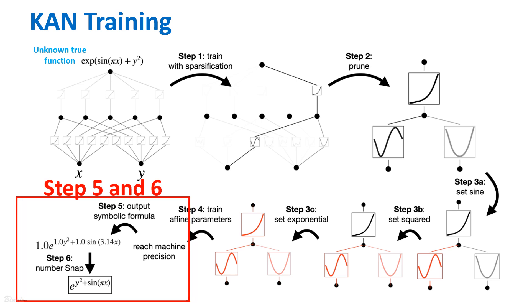Finally, we arrive at step five and six, outputting the symbolic formula. The symbolic formula of the output node can be computed. It enables us to obtain a precise symbolic representation of the underlying mathematical relationship within the KAN. Upon running the computation, the user obtains the symbolic formula.